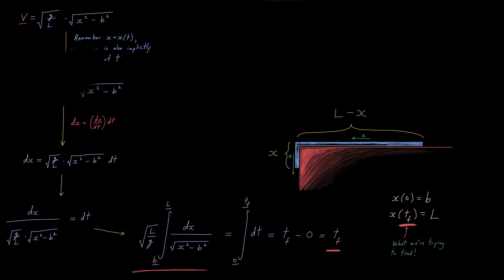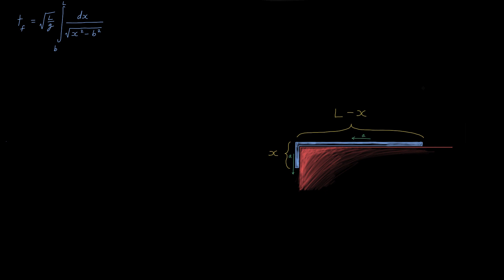But how in the world do I integrate an unwieldy fellow like that with a square root of x squared minus b squared in the denominator and pretty meager pickings for the numerator, if I do say so myself?